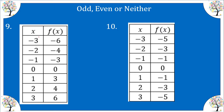For tables, look at an x-value and its opposite and compare the outputs. Here, the output at negative 6 is the total opposite of its pair, so this is odd. For the other table, looking at negative 3 and positive 3 — or any pair like negative 2 and 2 — the outputs are the same, so that is even.